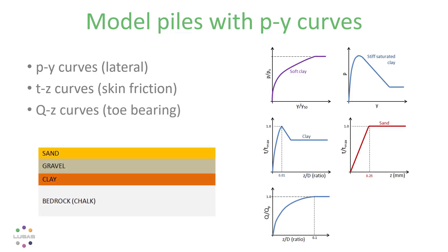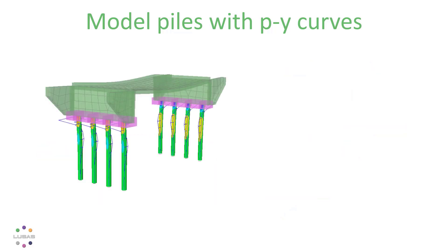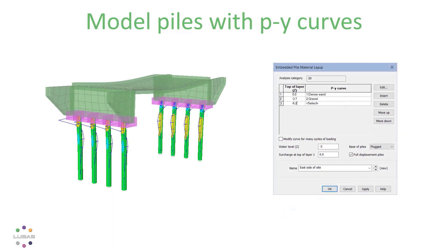Often your site would have layers of soil into which piles will be installed. In version 20, you can create one or more soil layups for your model.